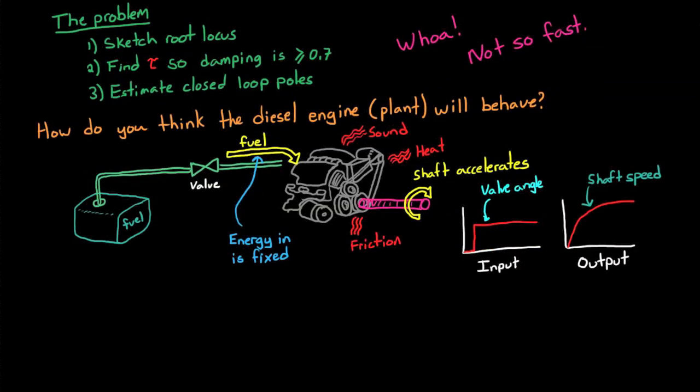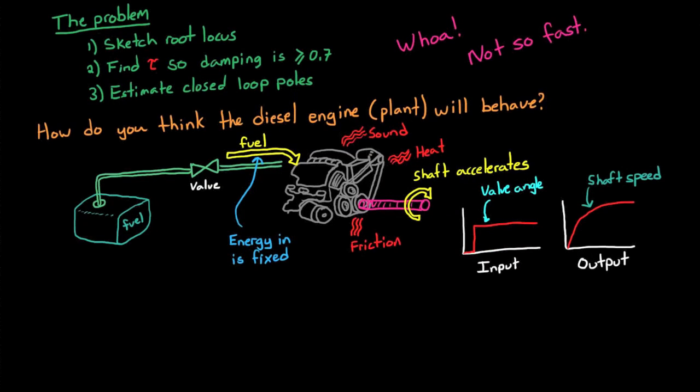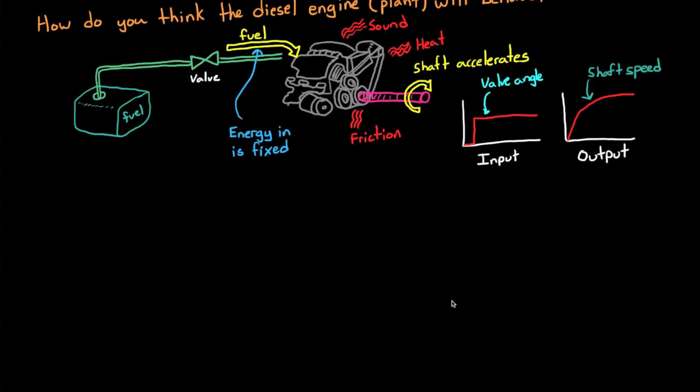Alright, now we know we have a plant that we can trust. So we want to adjust the PID controller so that it will automatically regulate the valve angle so that our engine spins at the commanded rate. But beyond that, we also want the controller to accelerate the shaft in such a way that the total closed loop system behaves similar to a second order system with damping ratio no less than 0.7.